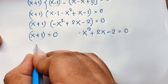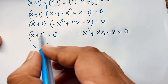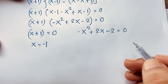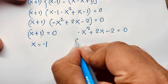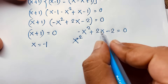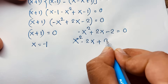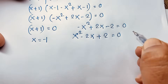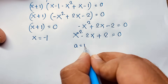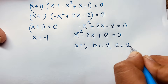Now, you can say here x is equal to negative 1. If I move this positive 1 to this side, it will be negative 1. But here, x squared — I take the negative sign common from both sides — and this is minus 2x, and this is positive 2 is equal to 0. Now here a is equal to 1, and b is equal to minus 2, and c is equal to 2.